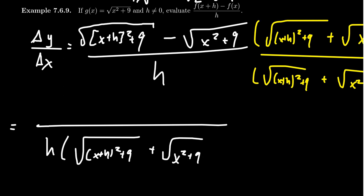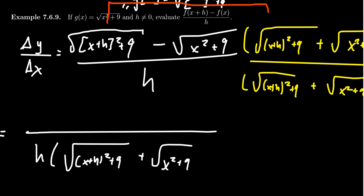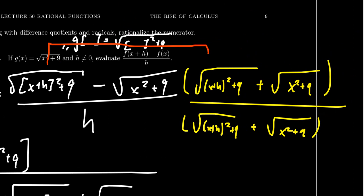Now in the numerator, I do want you to foil things out. When we talk about foil, we have first, notice I'm going to take the square root of x plus h squared plus 9 times by itself. When you square a square root, the square root just disappears and you're left with x plus h squared plus 9. So that's the first thing. This is our first with our foil. Next, you're going to multiply together the outside terms.